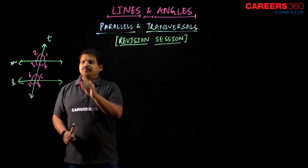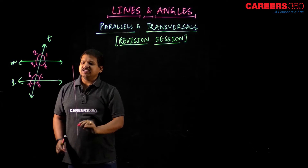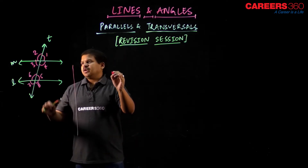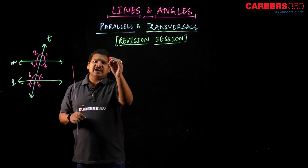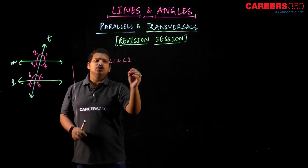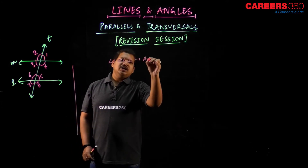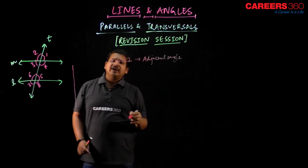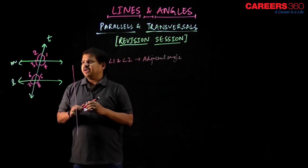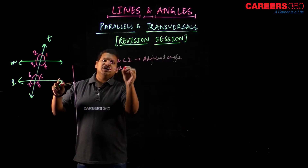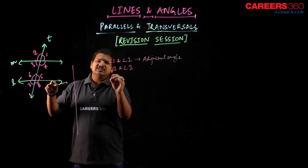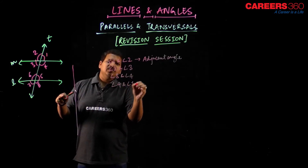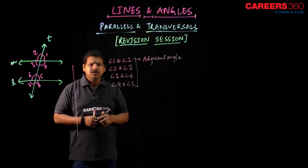Let us just revise what types of angles we have studied till now. As you can see, angle 1 and angle 2 are adjacent angles. So if I talk about adjacent angles, we have: 1 and 2, angle 2 and angle 3, angle 3 and angle 4, and angle 4 and angle 1 — they are all adjacent angles.